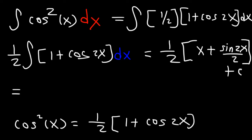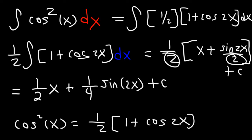So the final answer: if we distribute the 1 half, it's going to be 1 half x, and then 2 times 2 is 4, so it's gonna be plus 1 fourth sine 2x plus c. And so this is the answer - that's the integral for cosine squared dx.